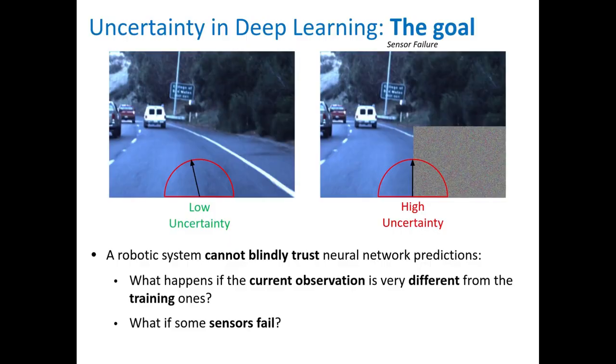Nowadays, deep learning has been more and more integrated into robotic systems. However, a robot cannot blindly trust the prediction of a neural network. What happens if the current observation is very different from the training ones? Or what if some of the sensors fail? A wrong prediction because of this can be very problematic for a robot and also for its surroundings. Think, for example, about an autonomous car.